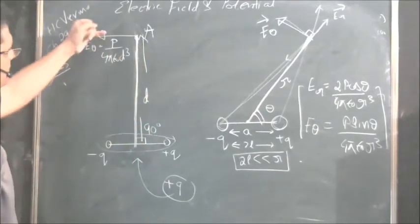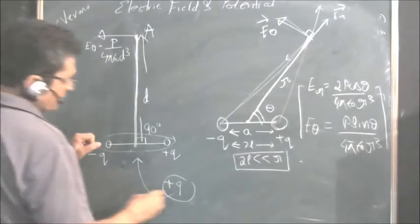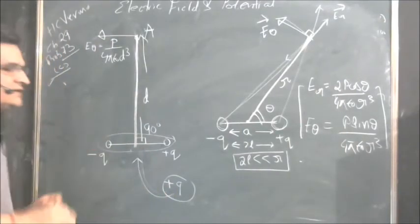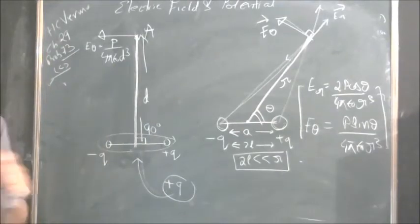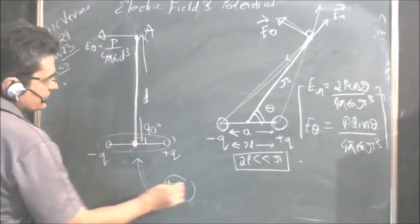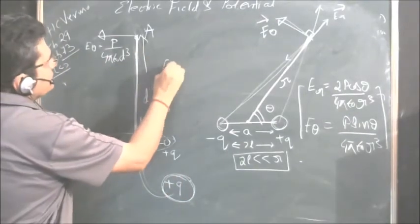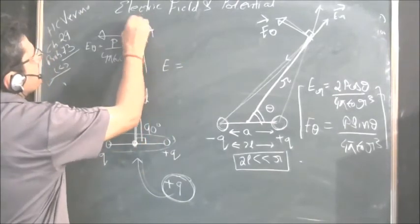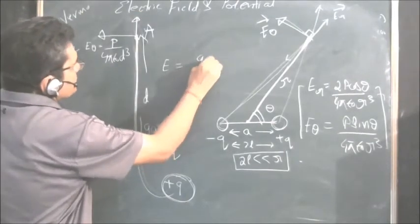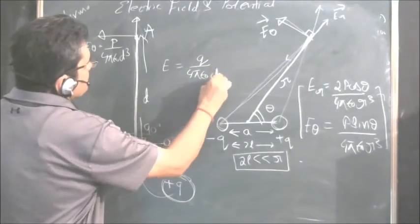Now the dipole problem is solved. Now place this charge here. A charge effect you can always superimpose. Place this charge here. What is the electric field due to this charge? Very simple. Electric field due to this charge will be in this direction and it will be Q / (4π ε₀ D²).